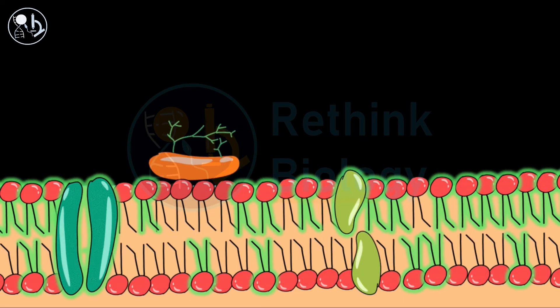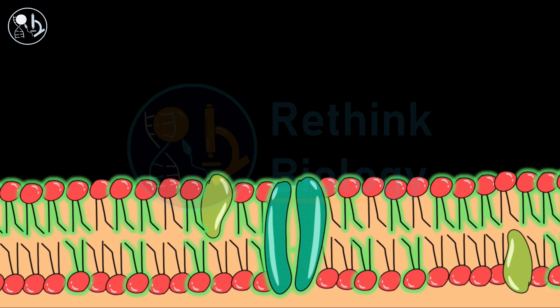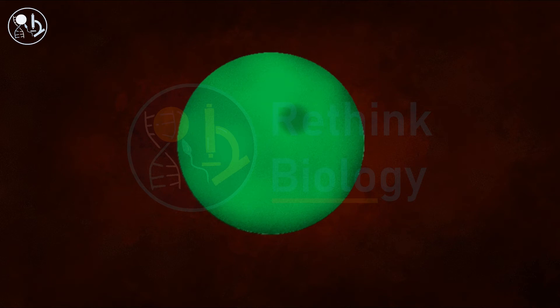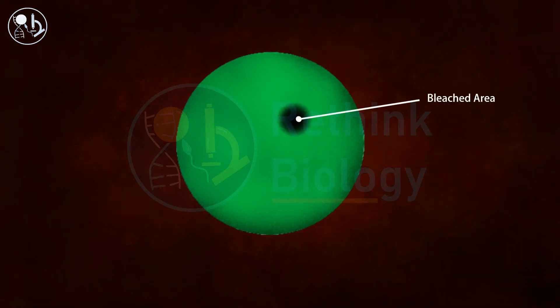But with time, due to the lateral movements of the lipids and associated proteins across the membrane, the bleached area will recover its fluorescence again. This rate of fluorescence recovery is dependent upon the mobility of the protein and lipid molecules across the membrane. The whole process will look like this under the microscope.